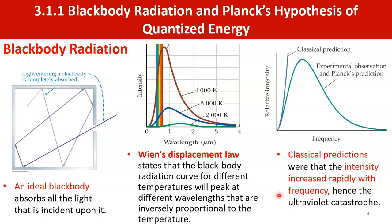Classical predictions were that the intensity increases rapidly with frequency, hence the ultraviolet catastrophe would happen. On a relative intensity versus frequency graph, classical prediction shows intensity increasing towards infinity as frequency increases. However, from experimental observation and Planck's prediction, when frequency increases the relative intensity rises to a certain point and then comes back down to zero.